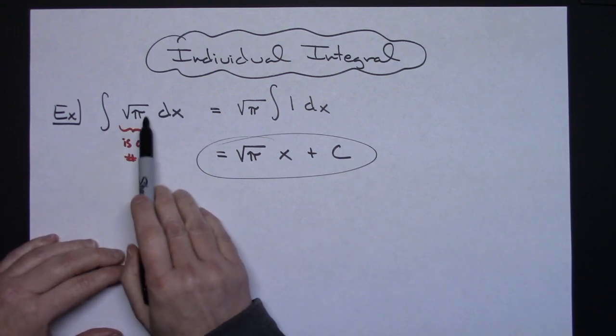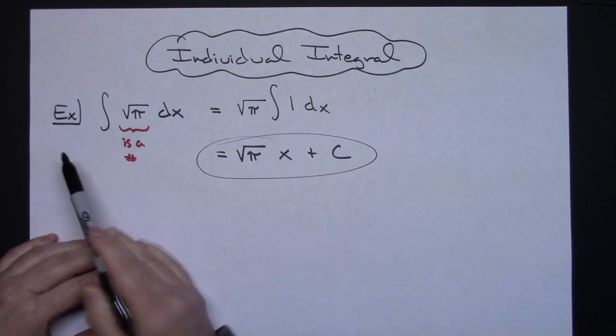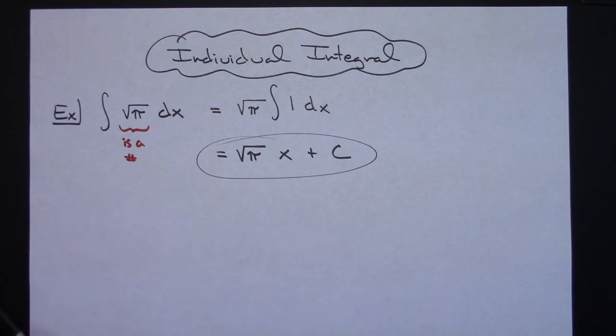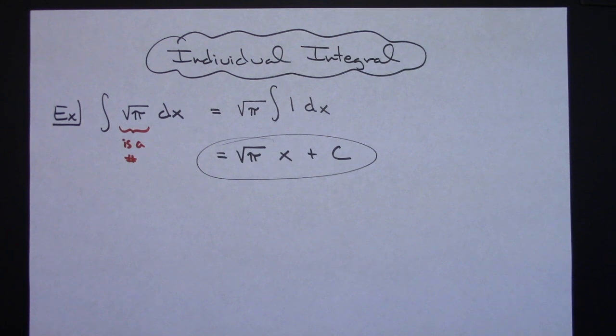Okay, think of it as a number, pull it out because it is a number, a constant, out in front. And then you're just integrating 1dx. Definitely thanks for watching and don't forget to share with your friends. Thanks.